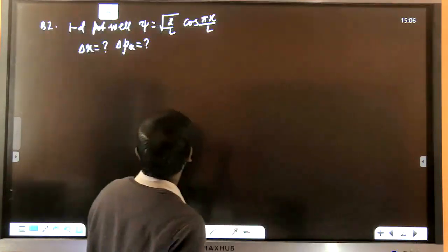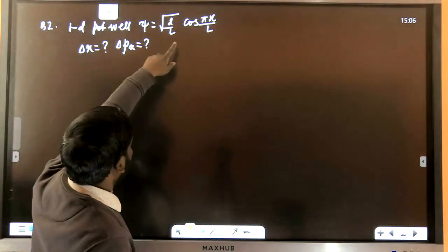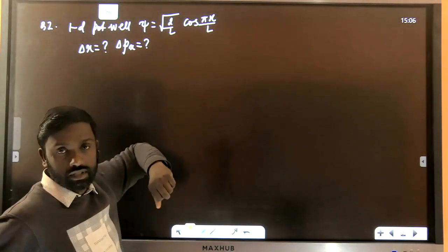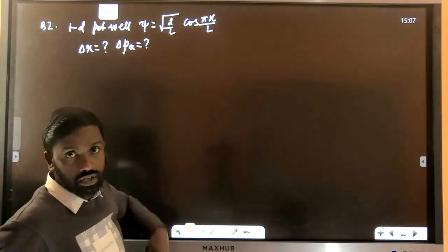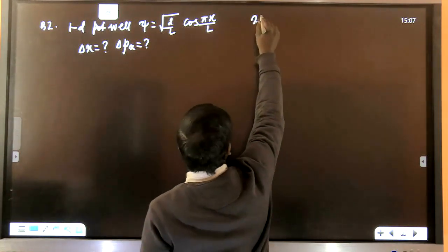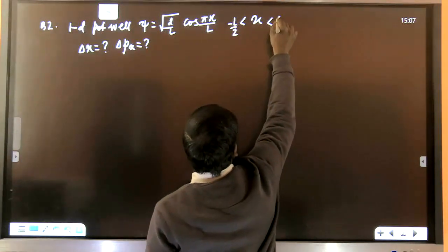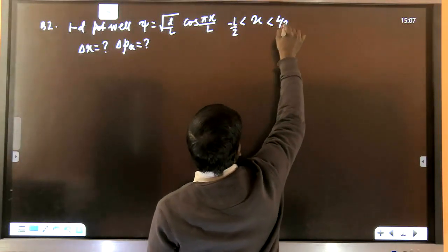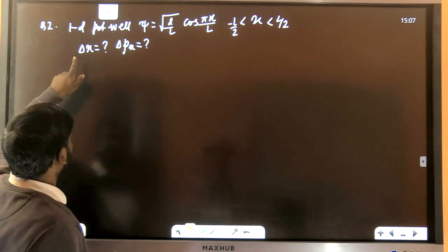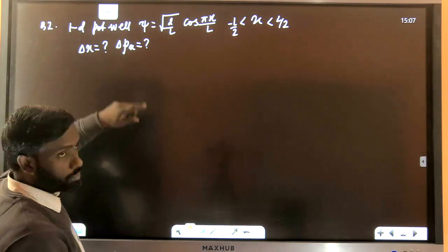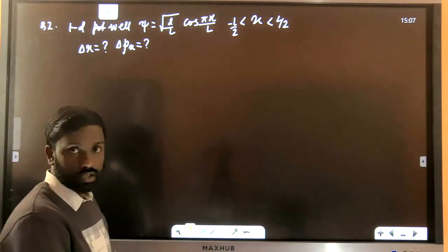Let's move to the second question. It says a 1D potential well has a wave function, which is the ground state wave function, with x ranging from −L/2 to +L/2. The question asks us to calculate ΔxΔpx. This is an MCQ question.